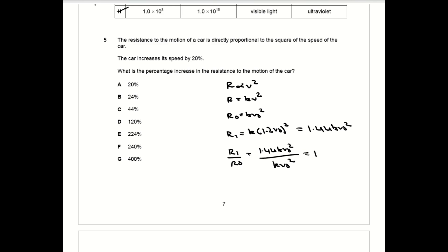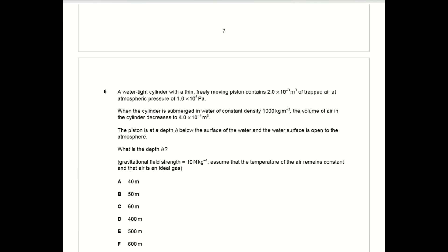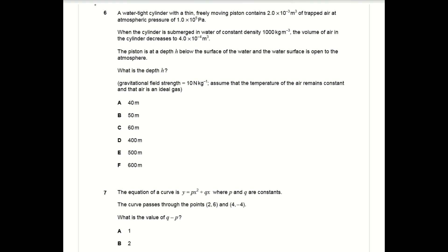Question six is a pretty tricky PV equals constant question. You can use that equation to work out the pressure when the cylinder is submerged below the water, which gives you a new pressure of 500,000 pascals. But when you're converting this to a height you need to remember that the equation for liquid pressure is delta P equals rho g delta h.